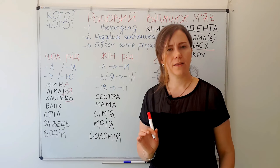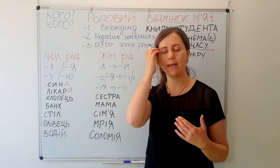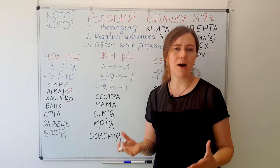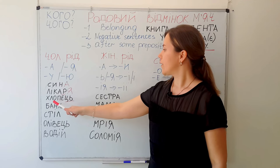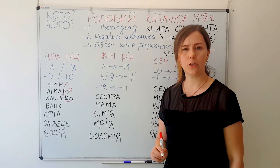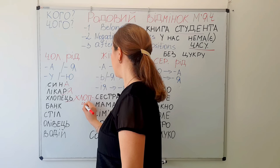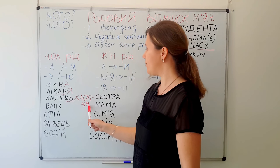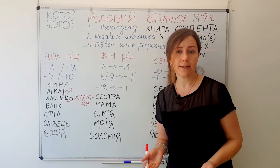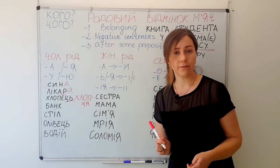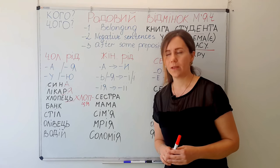For example: не приймай ліки без лікаря — 'don't take medicine without a doctor.' Next: хлопець — 'a boy.' The genitive form is хлопця, with the ending Я. Без хлопця — 'without a boy' or 'without a boyfriend.' Вона без хлопця — 'she is without a boyfriend.' Книга хлопця — 'a boy's book.'